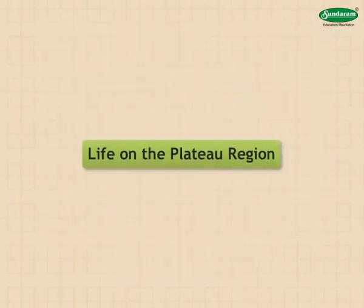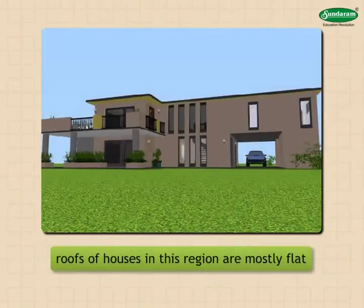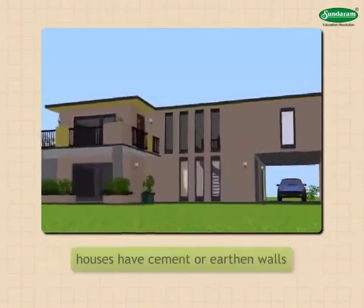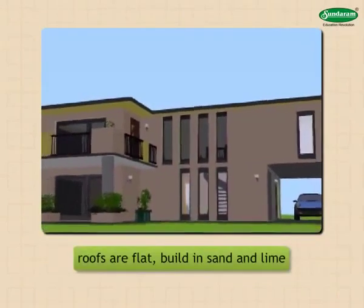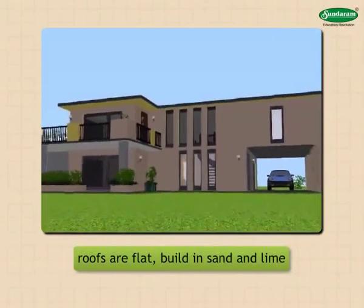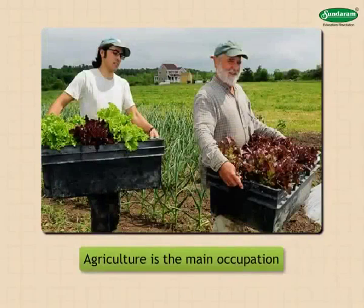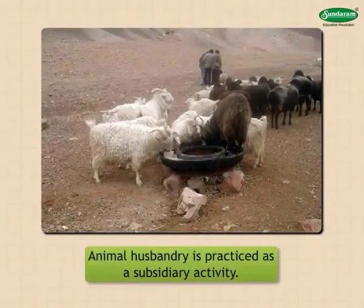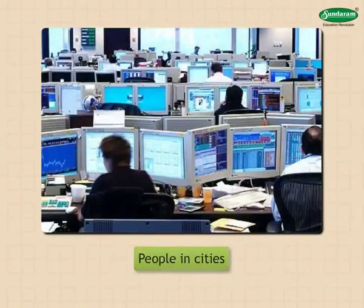Life on the plateau region: as the plateau region receives less rainfall, the roofs of houses in this region are mostly flat, built with cement or earthen walls in sand and lime. Some houses have tin sheet roofs or are tiled; some houses are built with stone. Agriculture is the main occupation of the people in this region. Animal husbandry is practiced as a subsidiary activity. Cottage industries are seen at a number of places. People in cities are engaged in industries, trade, and service.